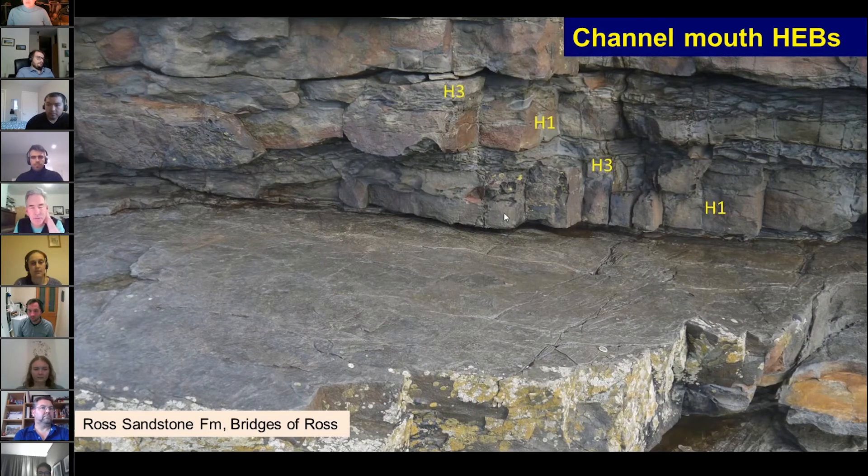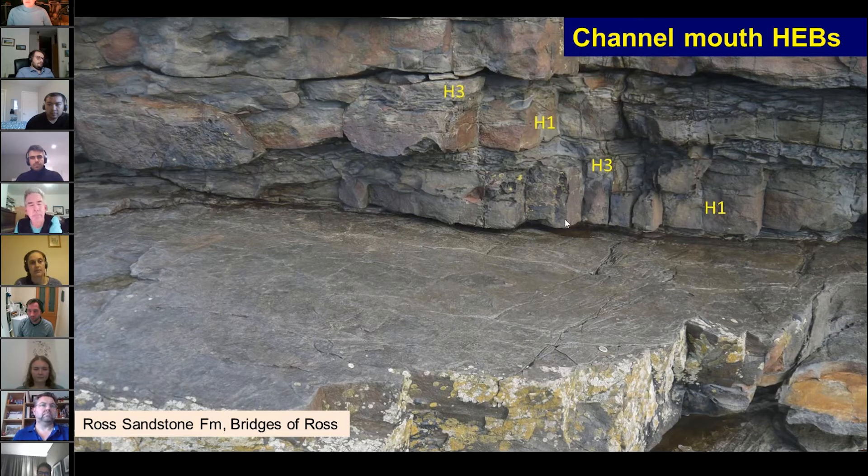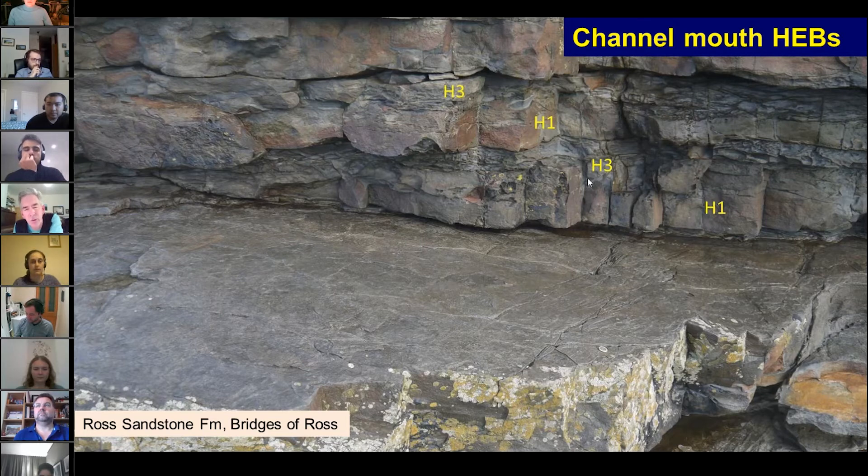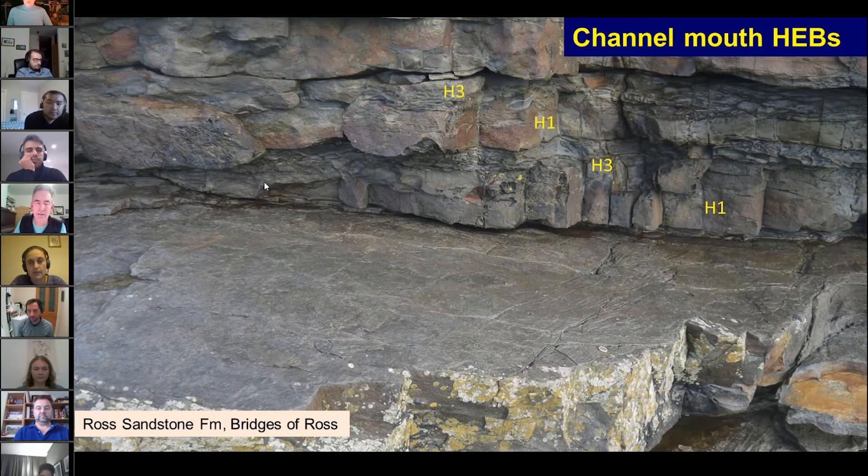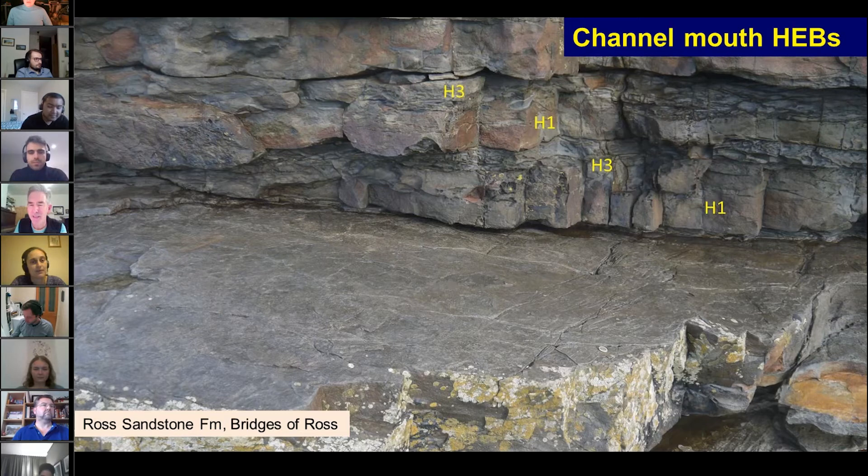Just a rare example from the Ross. We're in a channel mouth type setting here with a lot of scar, this is a scar surface. Onto it, we can see pinching out a nice pair of what we would call hybrid event beds with H1 sands. Not much of an H2 expression here, but nice H3 three divisions as well. A common context: they often fill topography or smooth rugosity. Somebody said once they're a bit like self-leveling cement. I think that's a really good description of them.